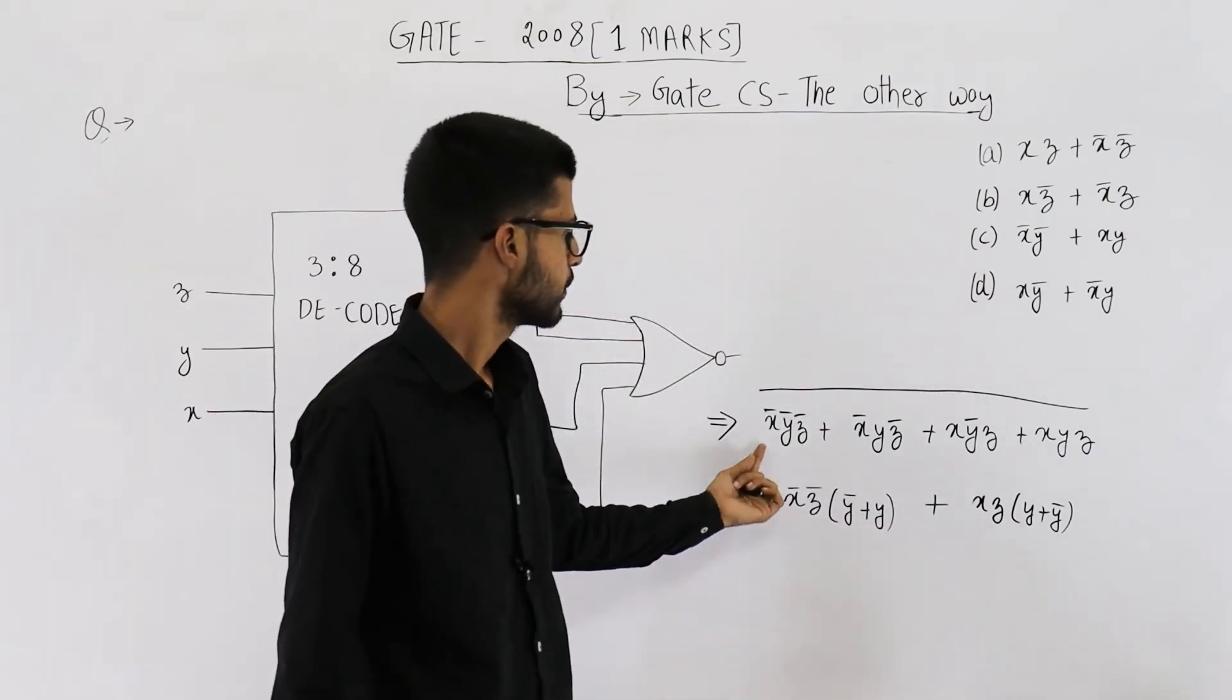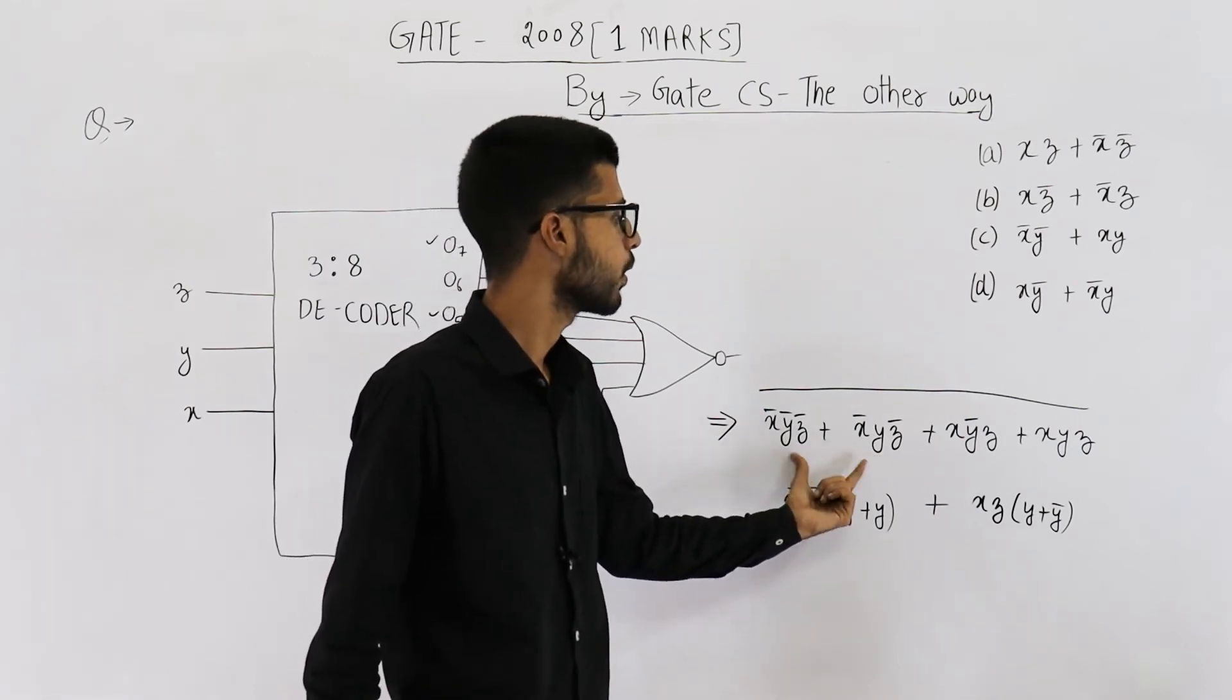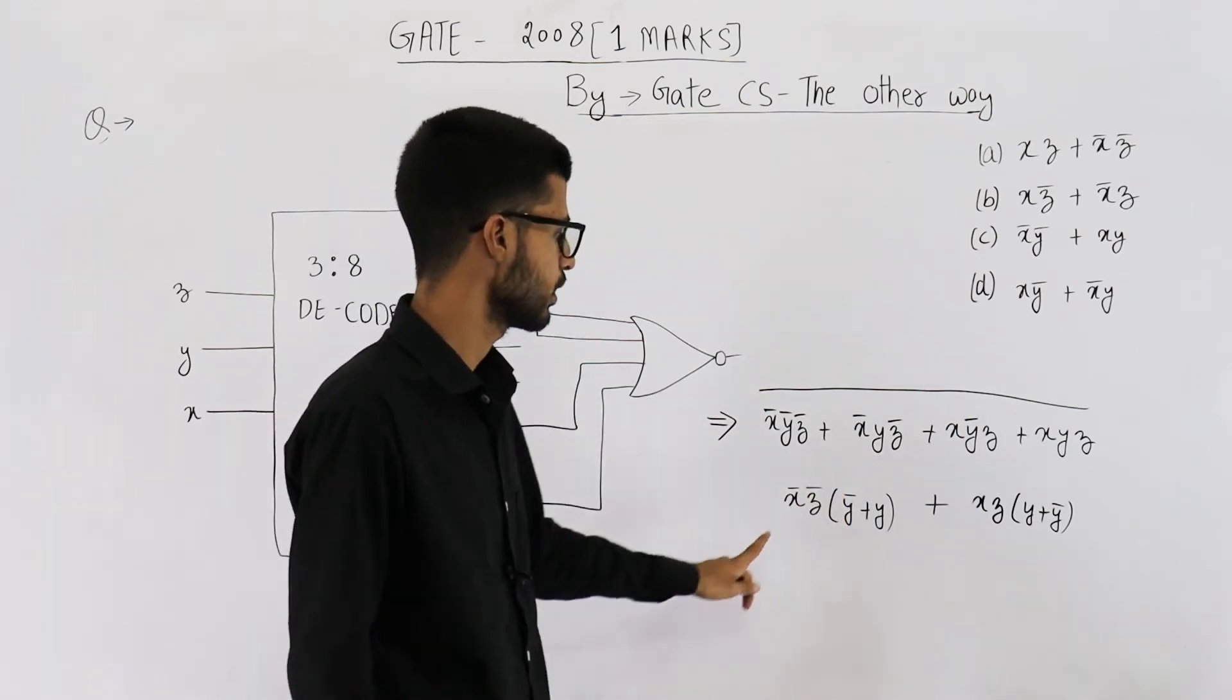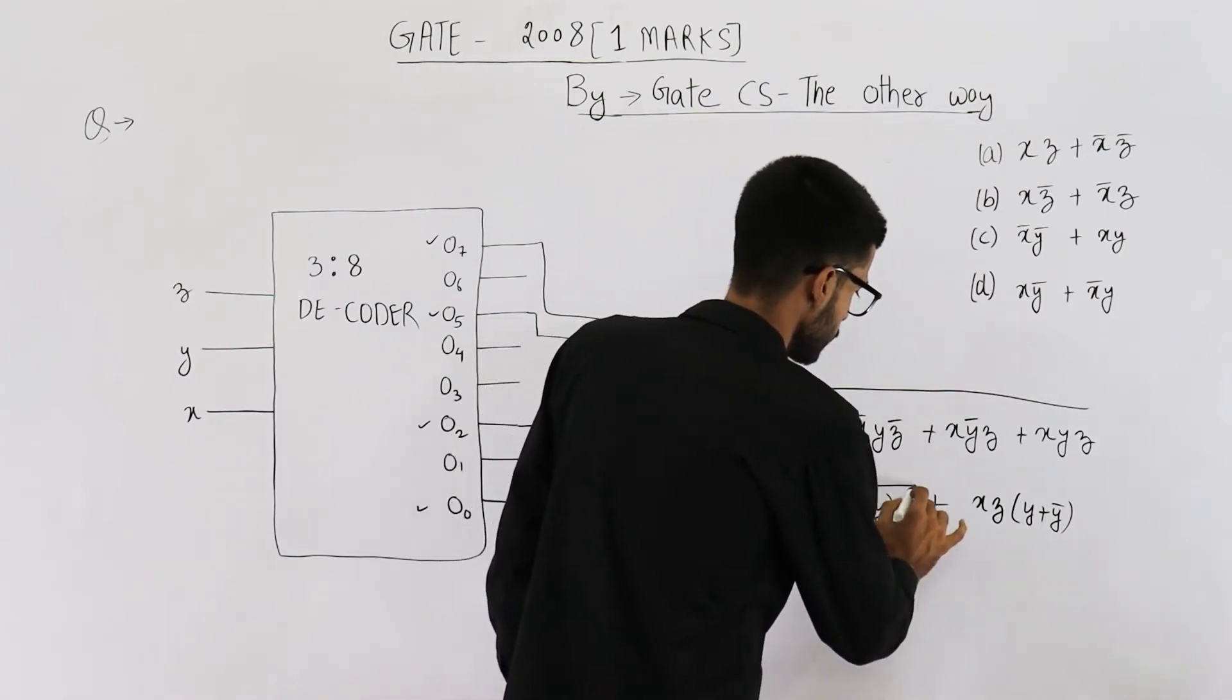Similarly, x bar z bar can be taken common from these two terms. So I have taken it common, and this is what you are going to get.